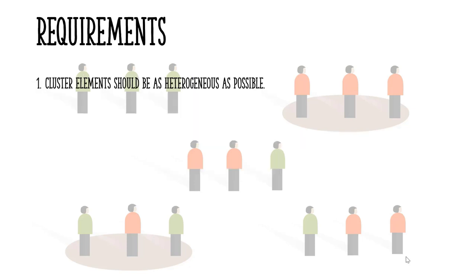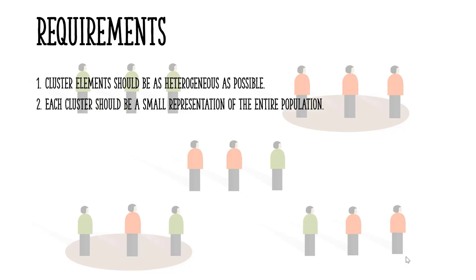There are a few requirements. Cluster elements should be as heterogeneous as possible — in other words, the population should contain distinct subpopulations of different types. Each cluster should be a small representation of the entire population. Each cluster should be mutually exclusive, meaning it should be impossible for each cluster to occur together.